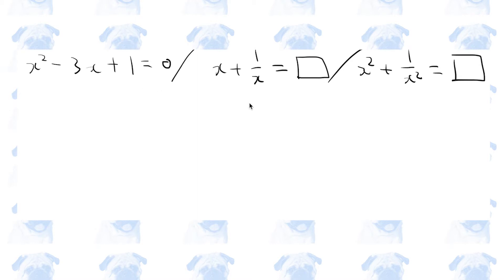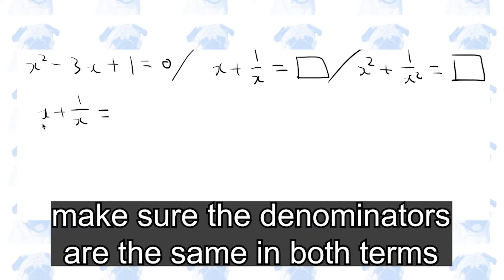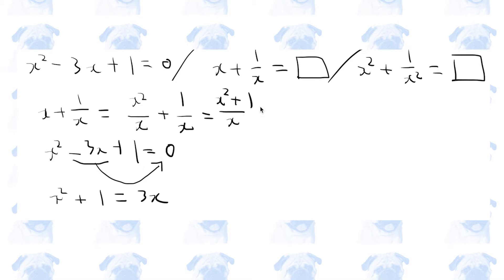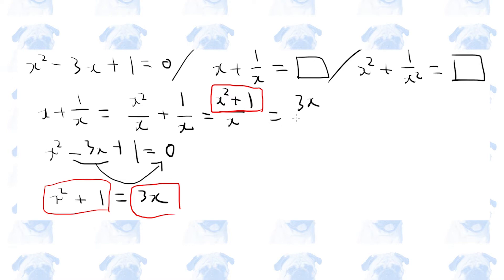We are given that x squared minus 3x plus 1 equals 0. We need to find the value of x plus 1 over x, and x squared plus 1 over x squared. Let's make the denominators of these terms the same. Going back to the original quadratic equation, x squared plus 1 equals 3x. Substituting 3x, we find that x plus 1 over x equals 3.